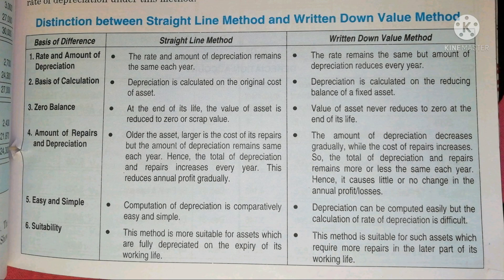Whereas under the Written Down Value Method, the amount of depreciation decreases gradually while the cost of repairs increases. As the asset gets older, the cost of repairs goes up — the same as under the Straight Line Method. So the total of depreciation and repairs remains more or less the same each year, hence causing little or no change in annual profit or losses.